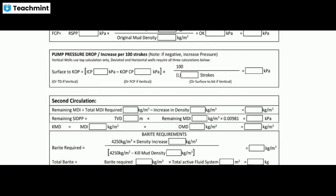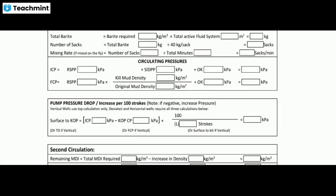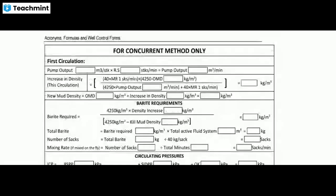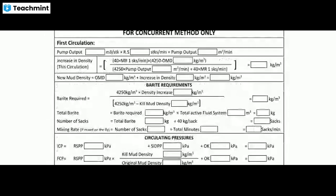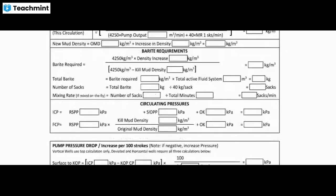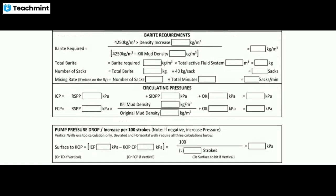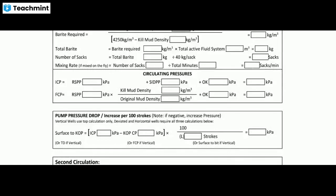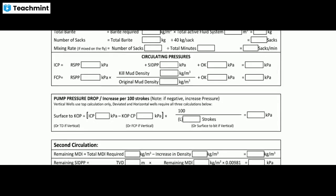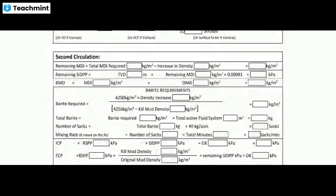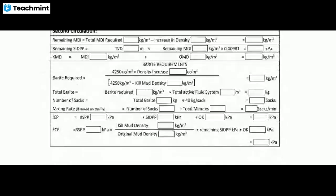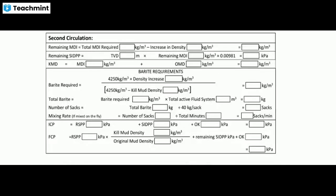You can see the barite requirements for the concurrent method — how much is required — and circulating pressure calculations clearly shown in the kill sheet. Pump pressure drops are shown per 100 strokes. The second circulation section shows what data should be input.